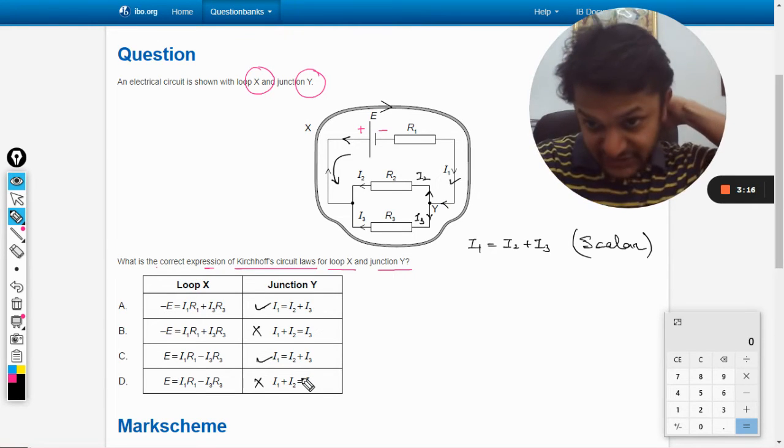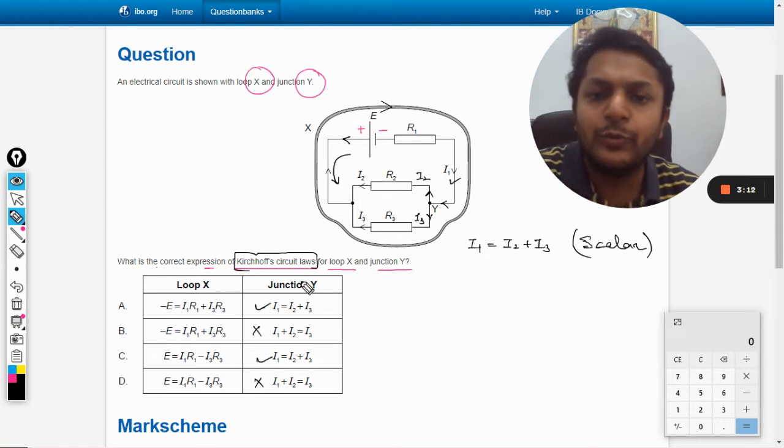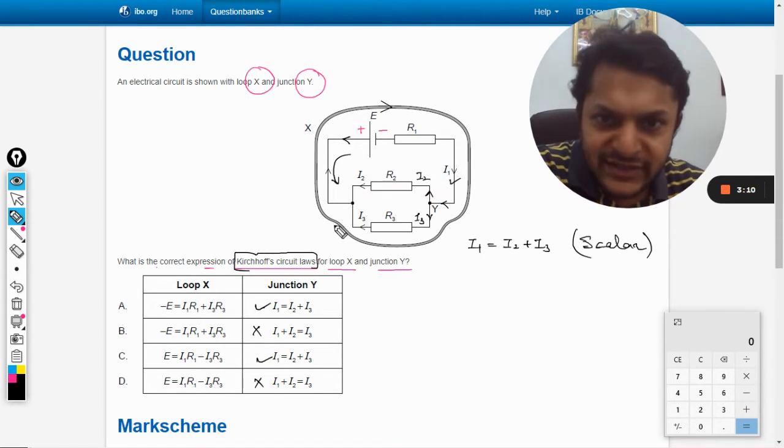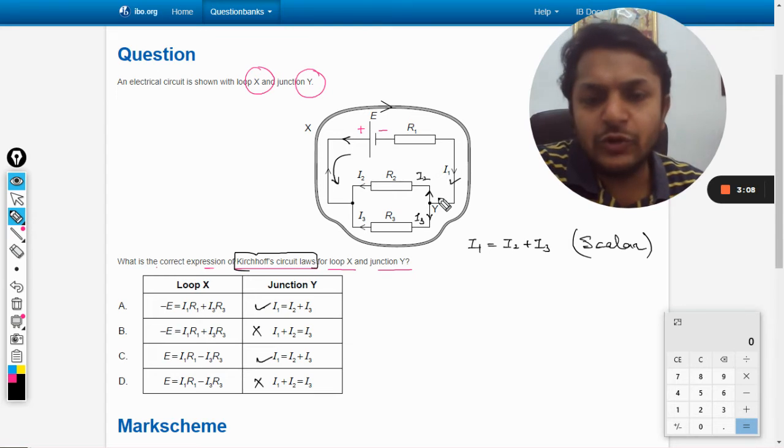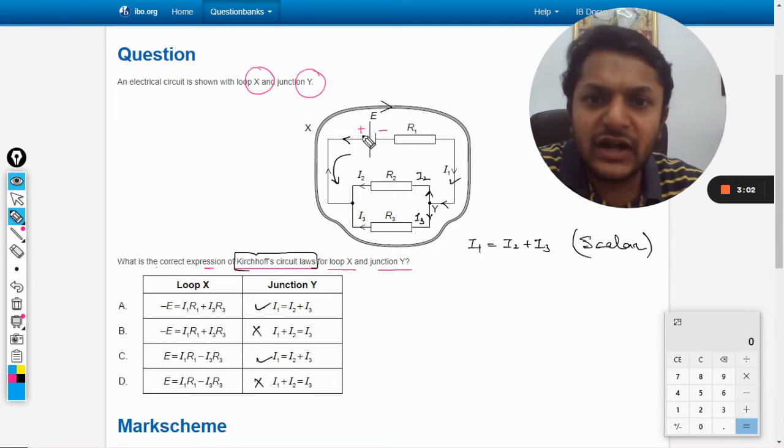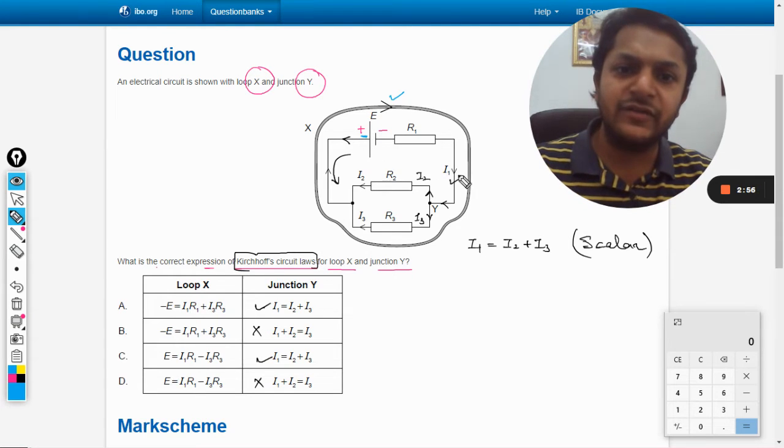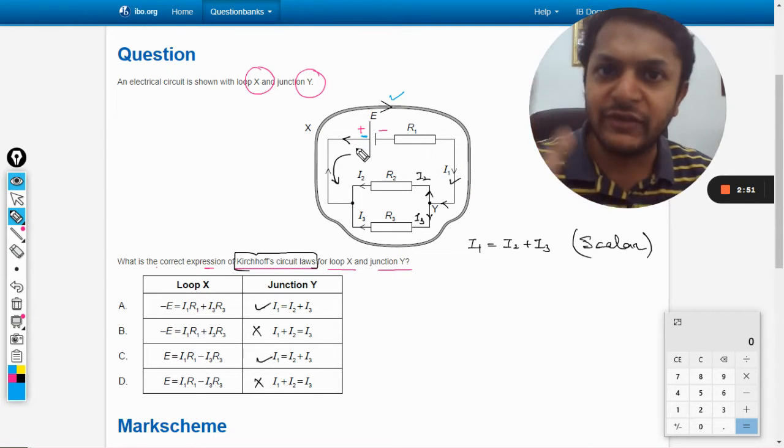Now the Kirchhoff circuit loop law. So the loop is going in this way, so we have to start this loop from somewhere. Let us say that we start from the battery, and we move according to this direction. So first there will be battery, then there will be R1, and then there will be R3, and then we will again reach the same point. Our loop will be complete.